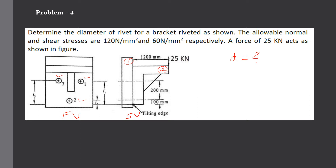We assume all three rivets are of equal size — the diameter is the same for all three. From the figure, rivets one and three are at a height of l1 from the bottom of the bracket. The point highlighted at the bottom edge of the bracket is called the tilting edge.